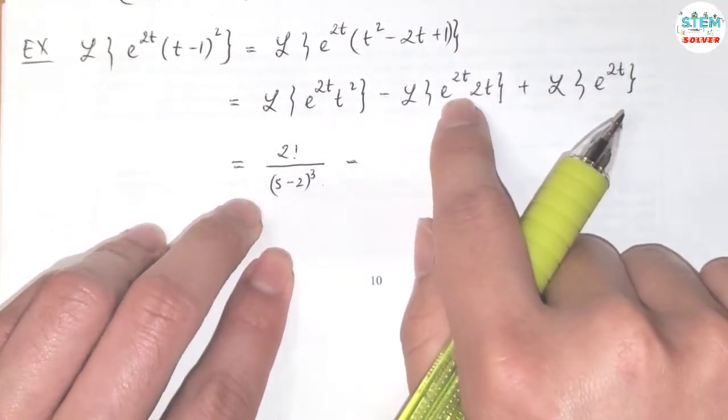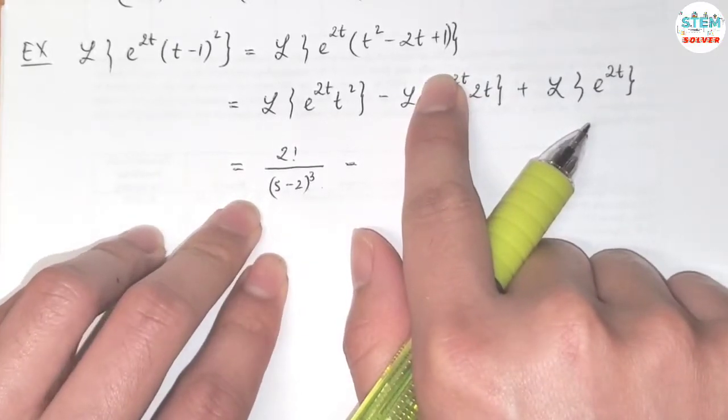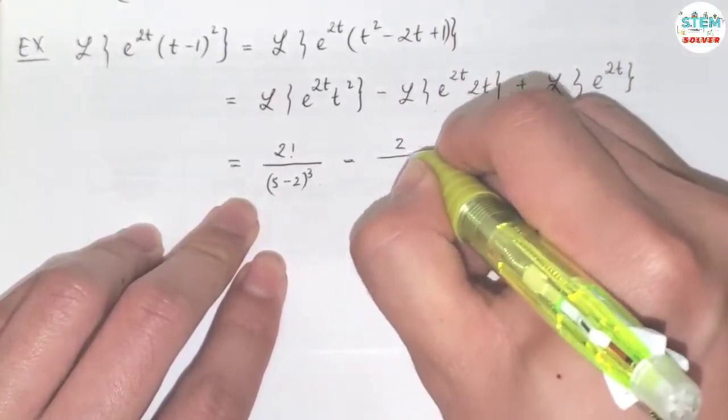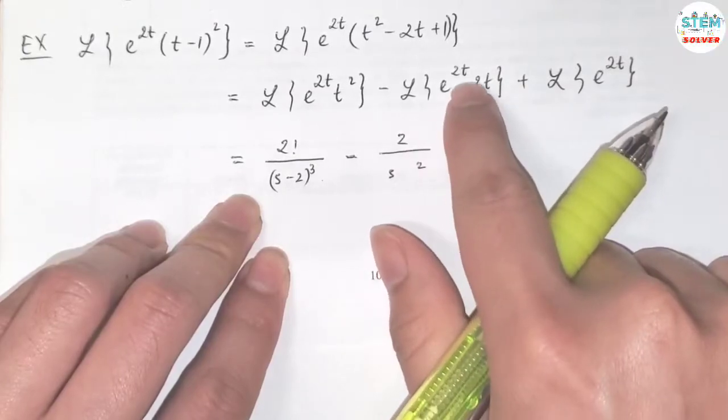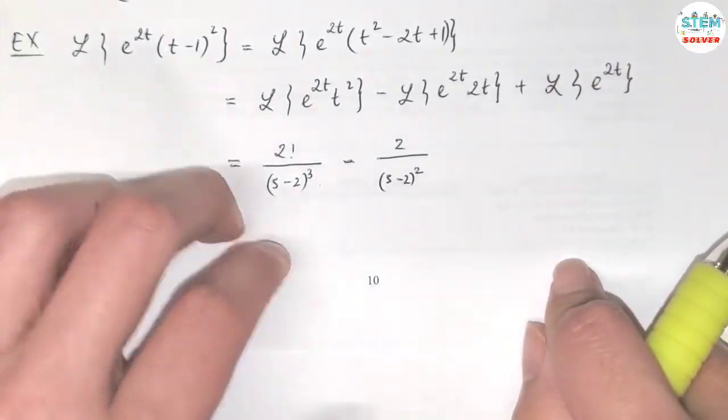Now for this one, we are going to do the same thing. So ignore this, the Laplace transform of t is 2 over s squared. And the shift is 2, so you have s minus 2.